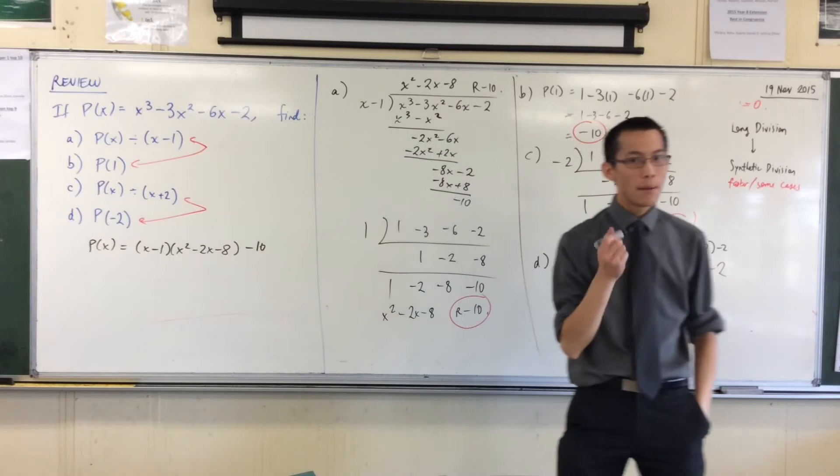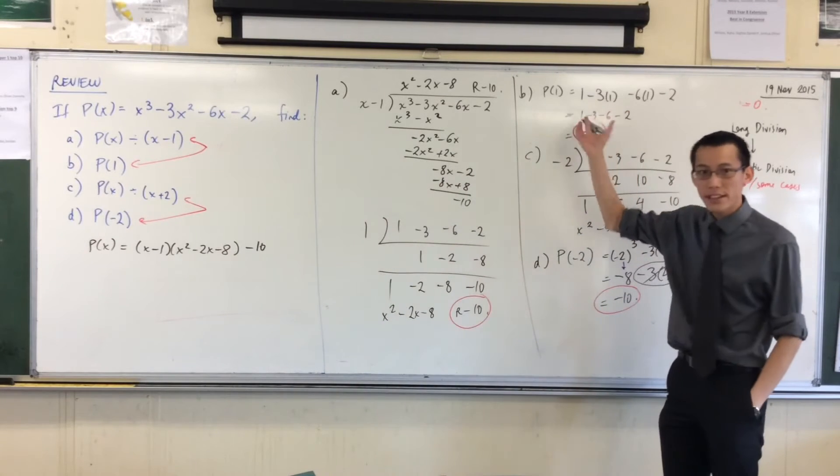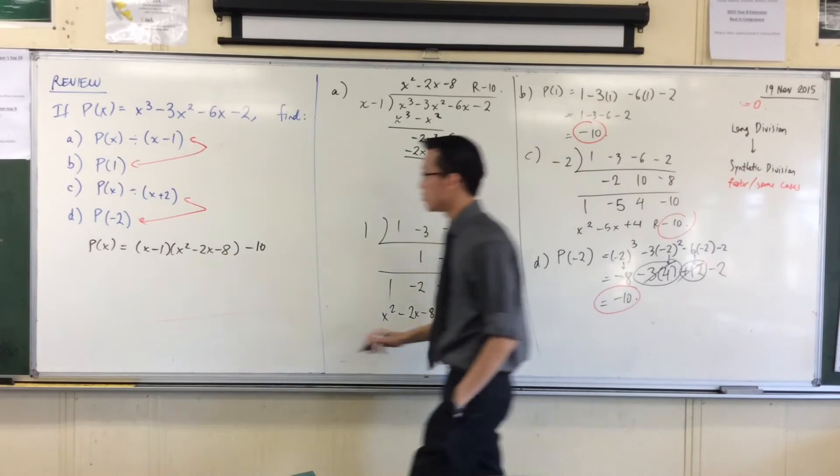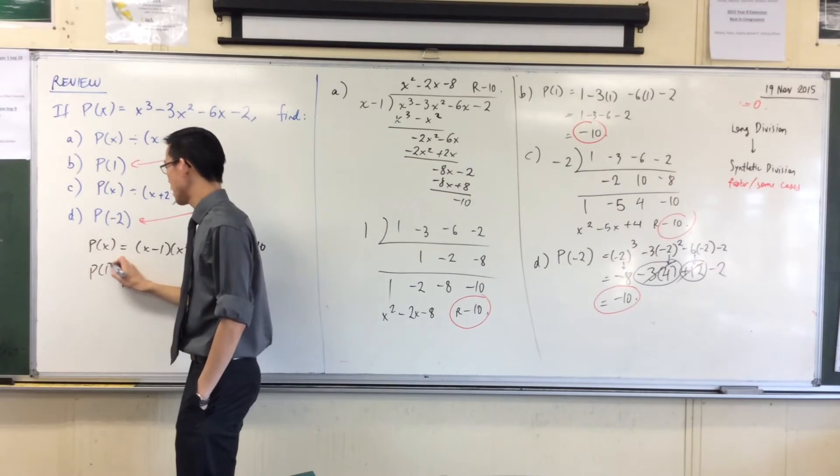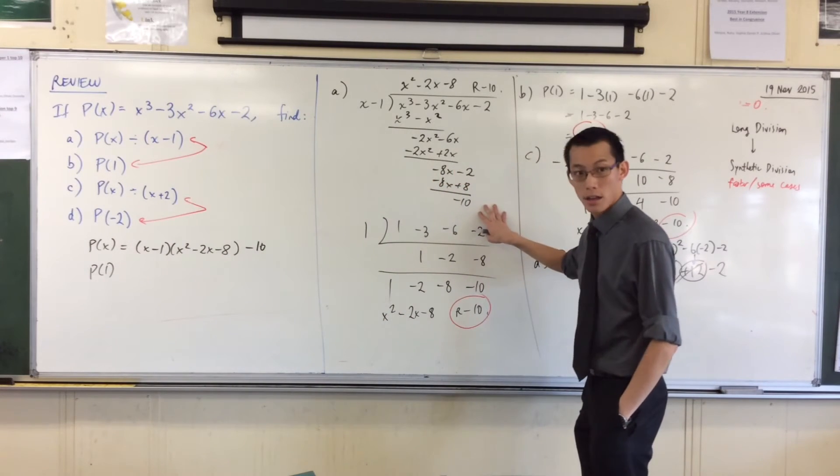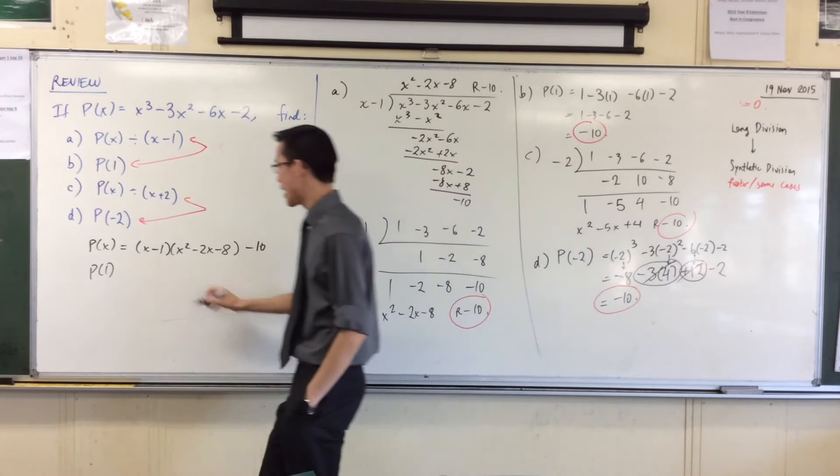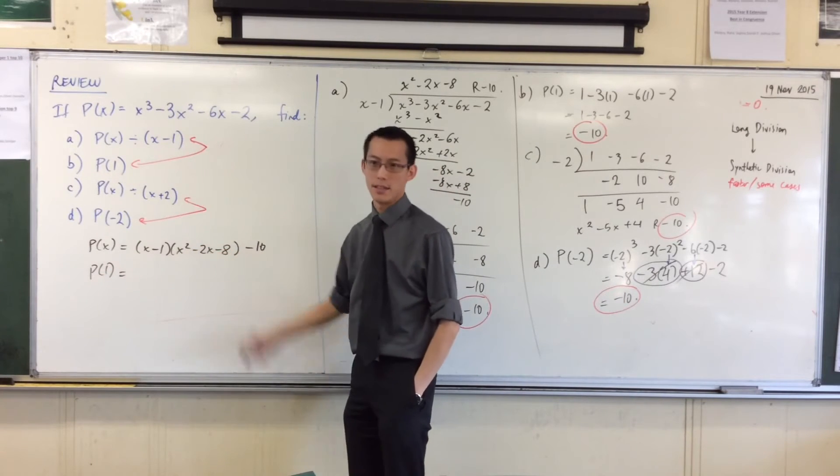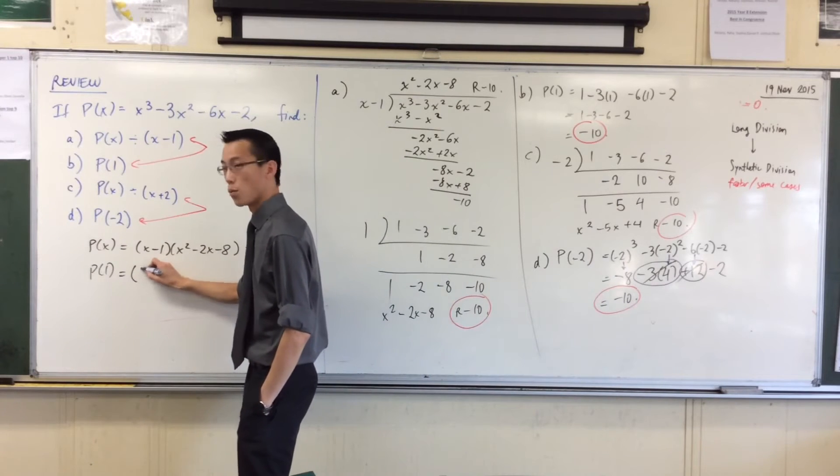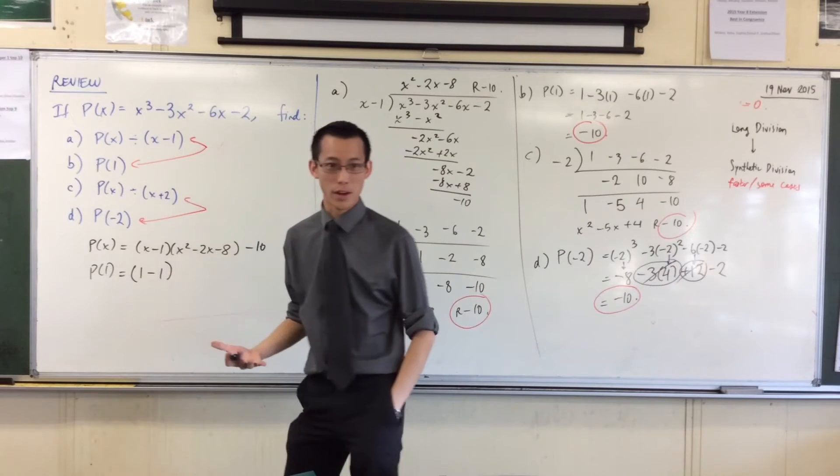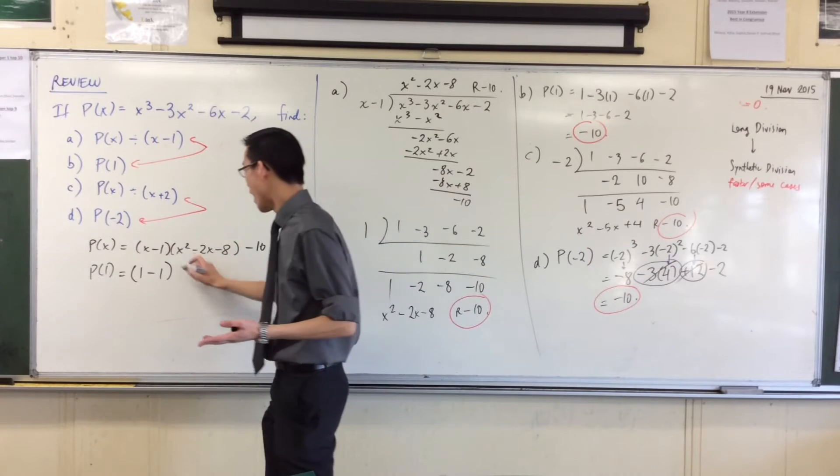But now can you see, without actually really doing the substitution, as soon as I've written it in this form you know why I should end up with the remainder. Can you see it yet? Let me write it up. If I put in one everywhere there's an x in this line, the first thing I'm going to do is look, there's a 1 minus 1 right there. Do you see that? Now you know what 1 minus 1 is, it's 0.